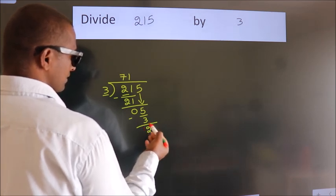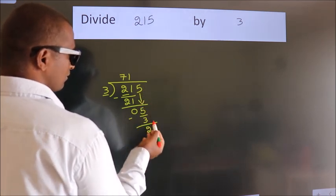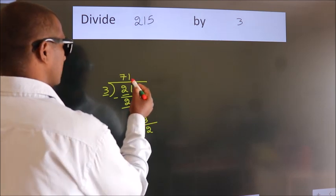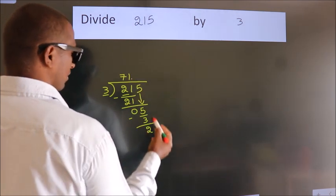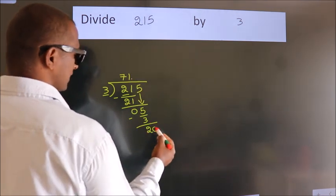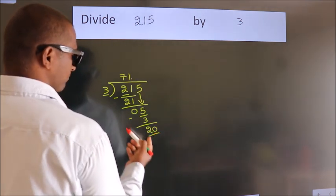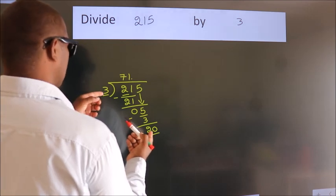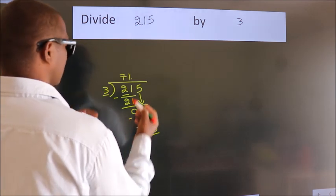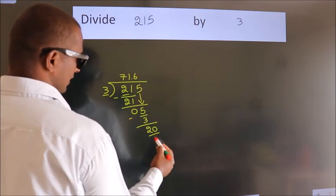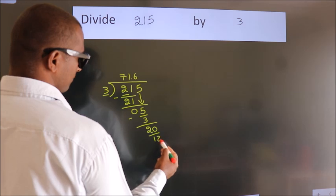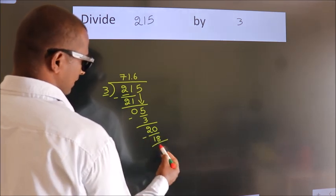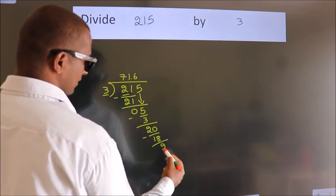After this, there are no more numbers to bring down. So what we do is put a dot and take 0, giving us 20. A number close to 20 in the 3 times table is 3 sixes, which is 18. Now we subtract. We get 2.